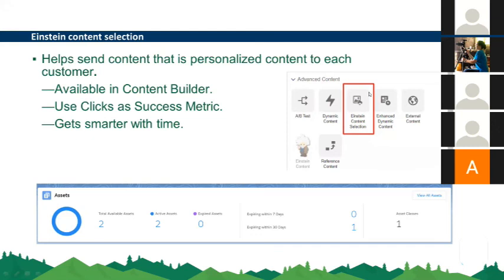For example, if you have a GIF and an image and want to know which performs better, you create an Einstein Content Selection block using both assets and Einstein automatically picks the right type for each customer. If historically a contact has had more clicks on a GIF compared to an image, they're more likely to see a GIF in the next email. This feature gets smarter over time — the more actively you use it, the more historical click data it accumulates. The dashboard displays how many assets are available, how many are active, how many are expired, and there is a timeline you define for each asset.